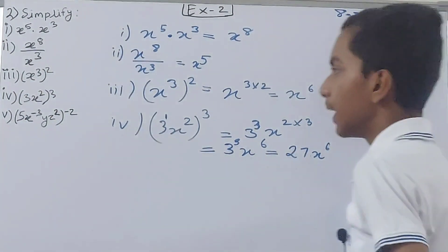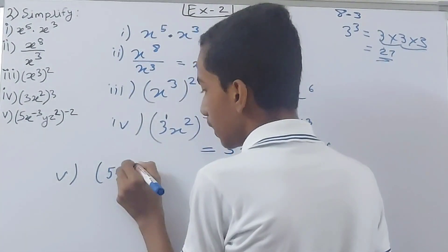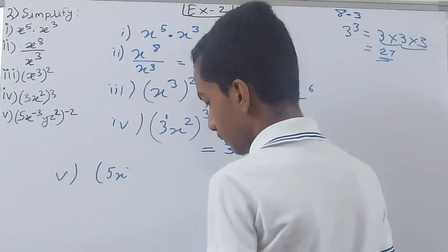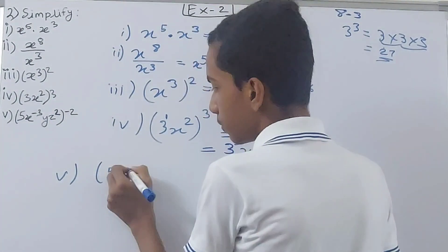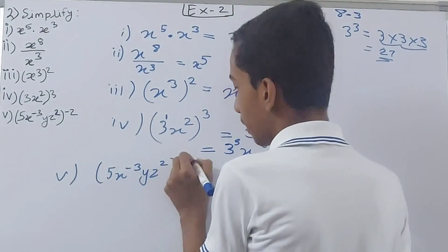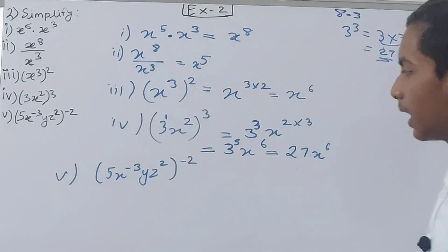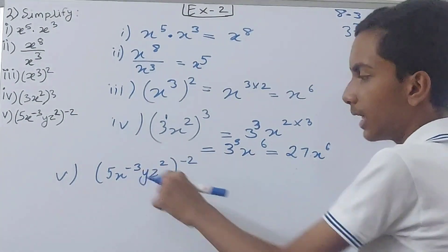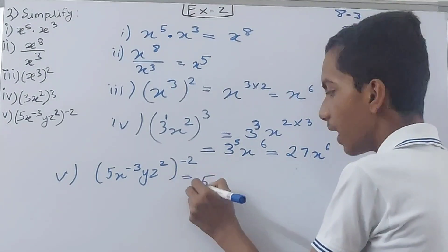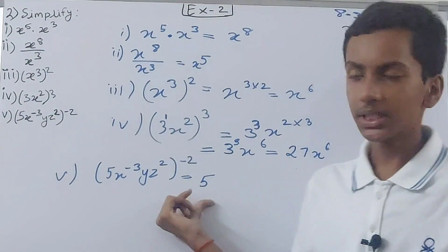The last one is: 5 times x to the power minus 3, times yz squared, whole to the power minus 2. We'll handle the negative exponents step by step. First, x has a negative exponent inside the bracket. The 5 will remain as it is since 5 has an implied power of 1.